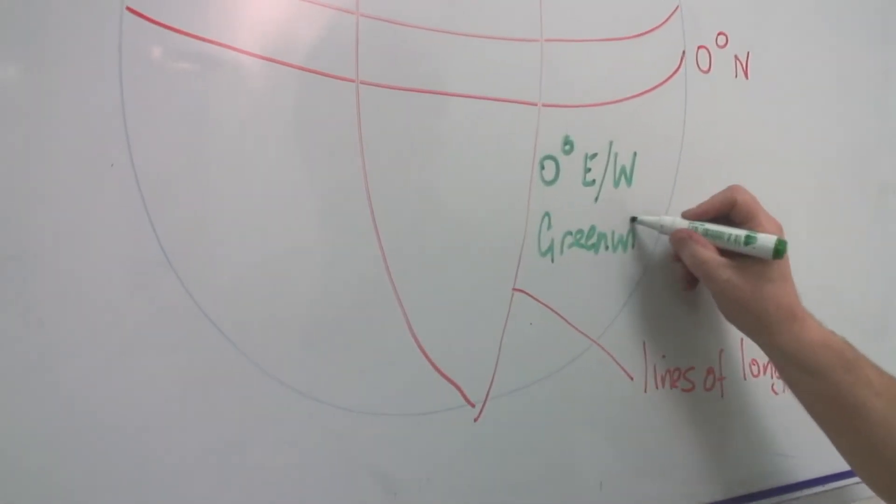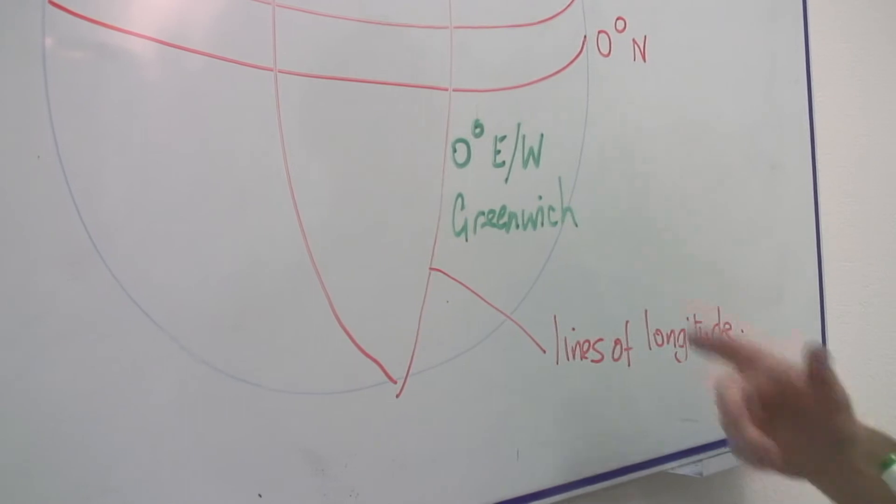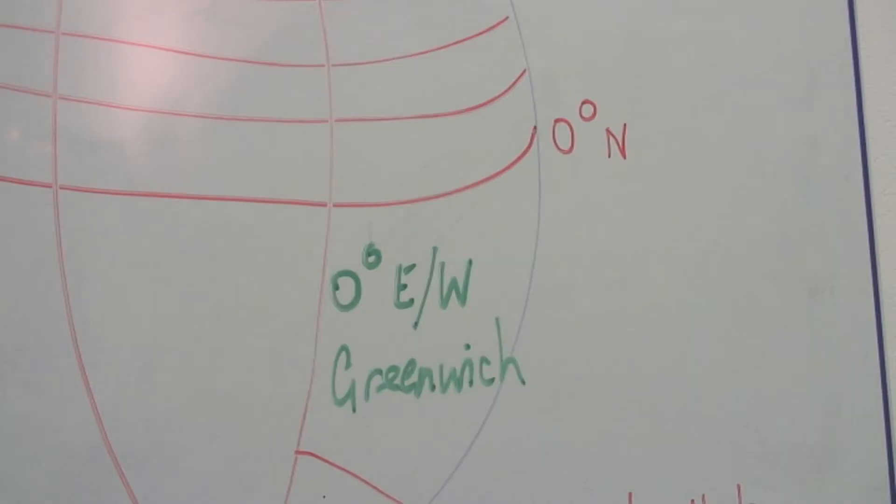And Greenwich was where the original lines of longitude were measured from Greenwich in London.